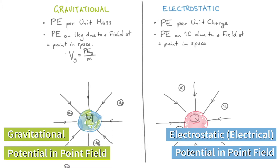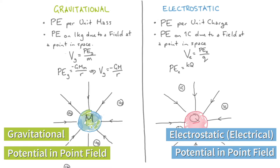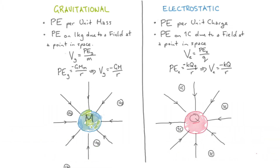Potential can be represented as V. In gravitational, V equals the potential energy per mass. We know the potential energy in gravitational is minus GMm over r, so we can derive that gravitational potential is minus GM over r for a point source anywhere in space. For electrostatics, V equals potential energy per charge, and for a point source we have minus kQq over r for potential energy, so the electrostatic potential itself is minus kQ over r. Those are the two key formulas for potential — both gravitational and electrostatic.